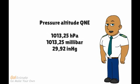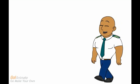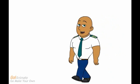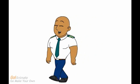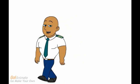Pressure altitude is the international standard height above the 1013.25 hectopascals pressure reference. The baseline pressure is 1013.25 hectopascals, equivalent to 1013.25 millibar, or 29.92 inches of mercury. The performance tables in your aircraft handbook are based on the standard atmosphere which uses this baseline pressure.